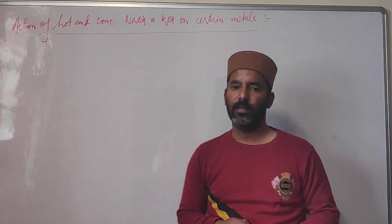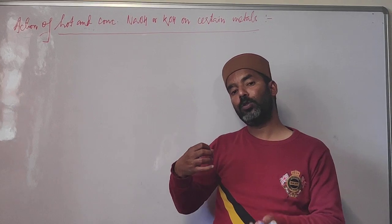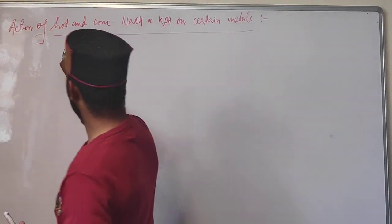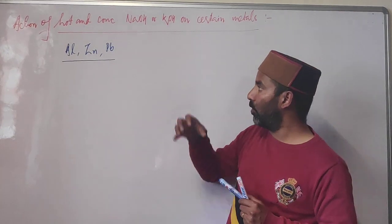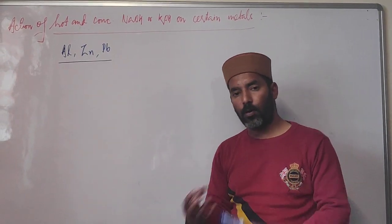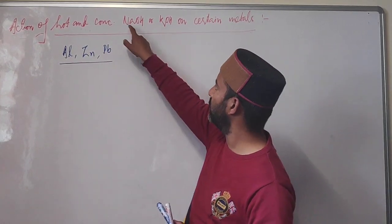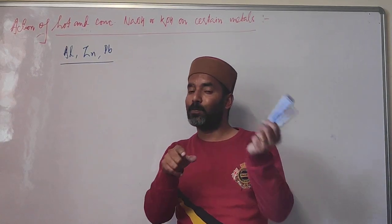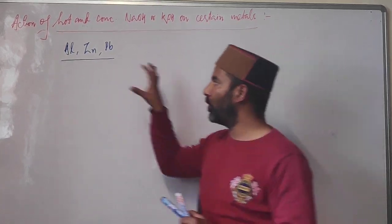We have learned that metals react with dilute acids to form salts and liberate hydrogen. However, some metals — aluminium, zinc, lead, etc. — not only react with acids but also react with hot and concentrated alkalis (NaOH or KOH) to form a water-soluble salt while also liberating hydrogen. Since these metals react with both acids and bases, they are called amphoteric metals.